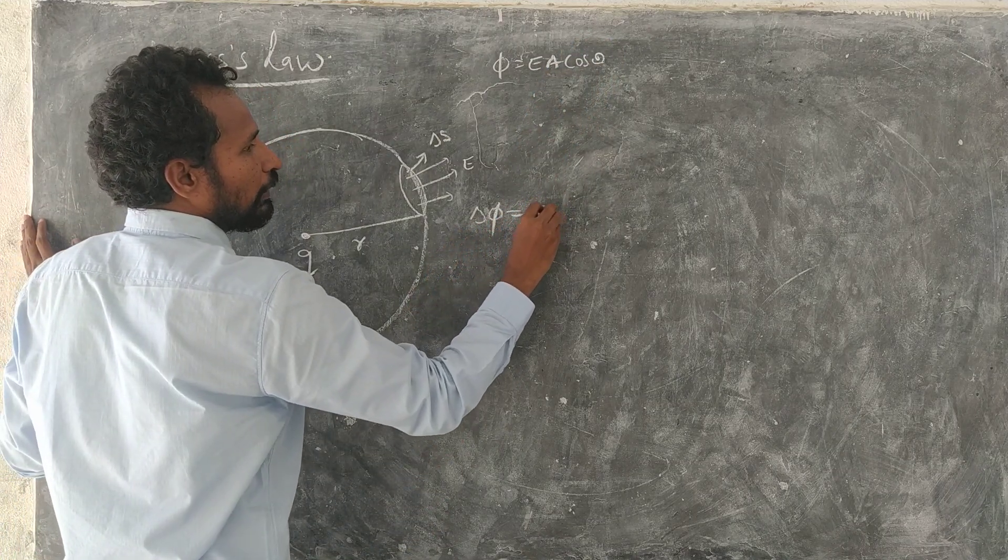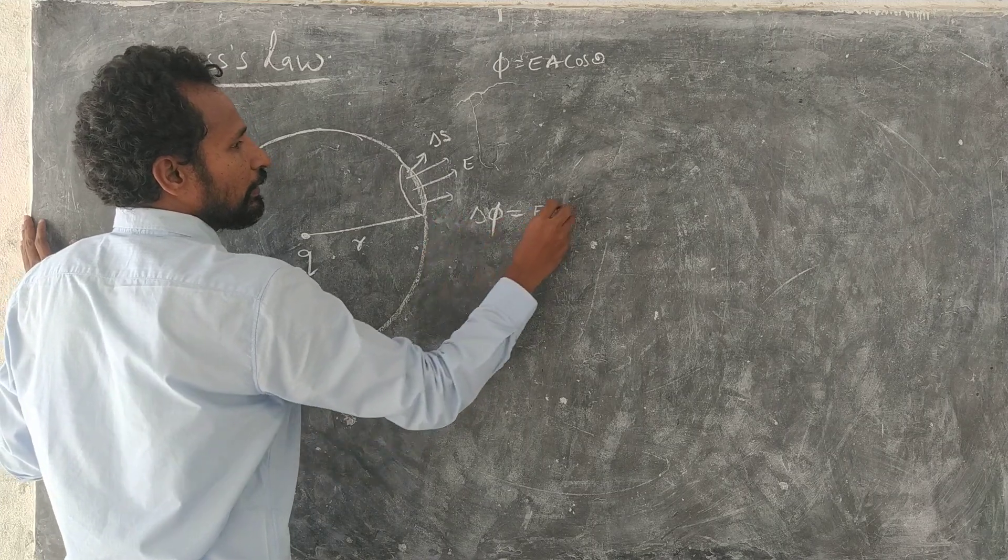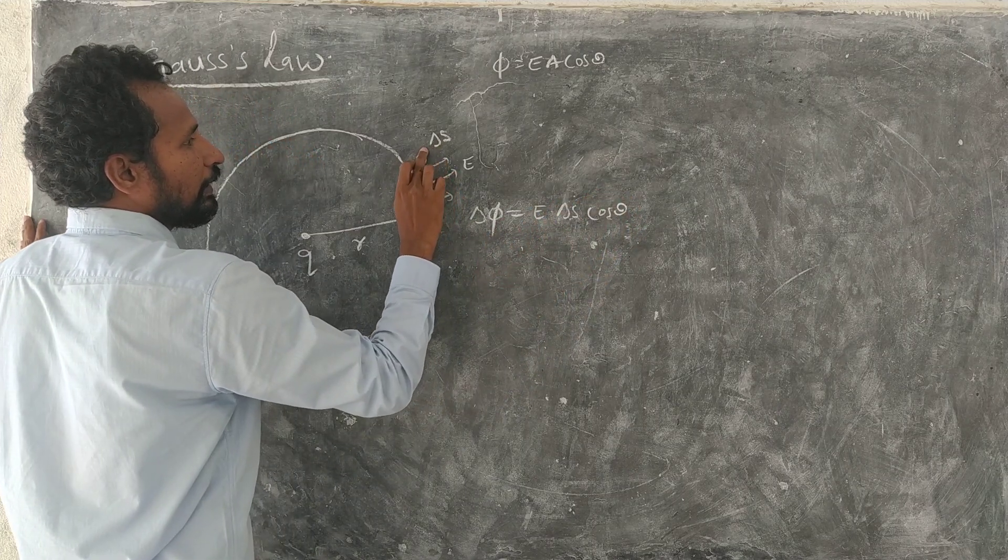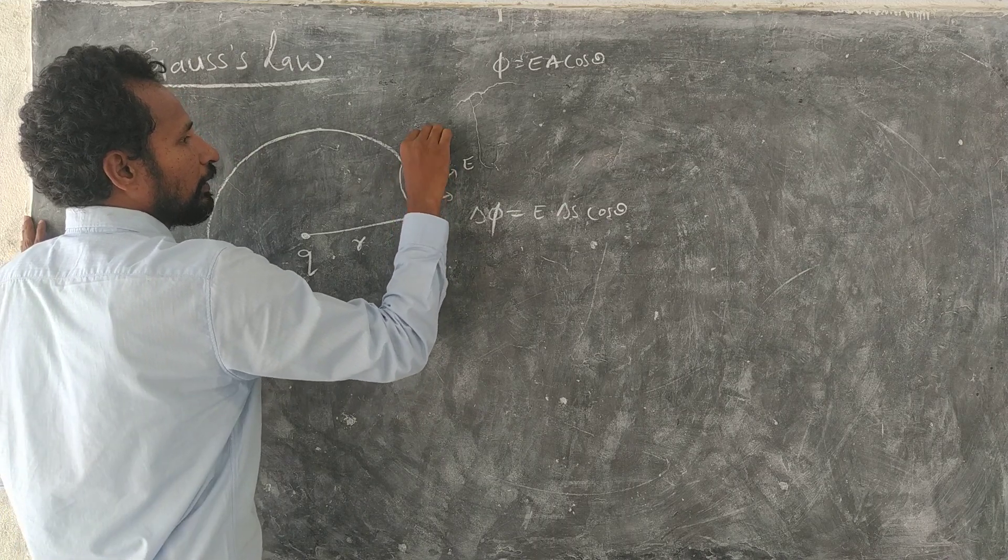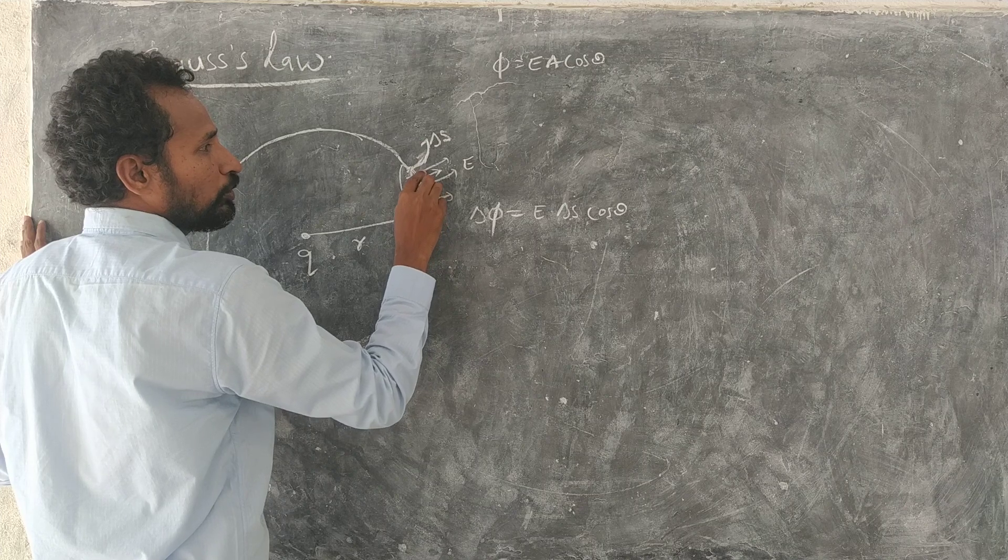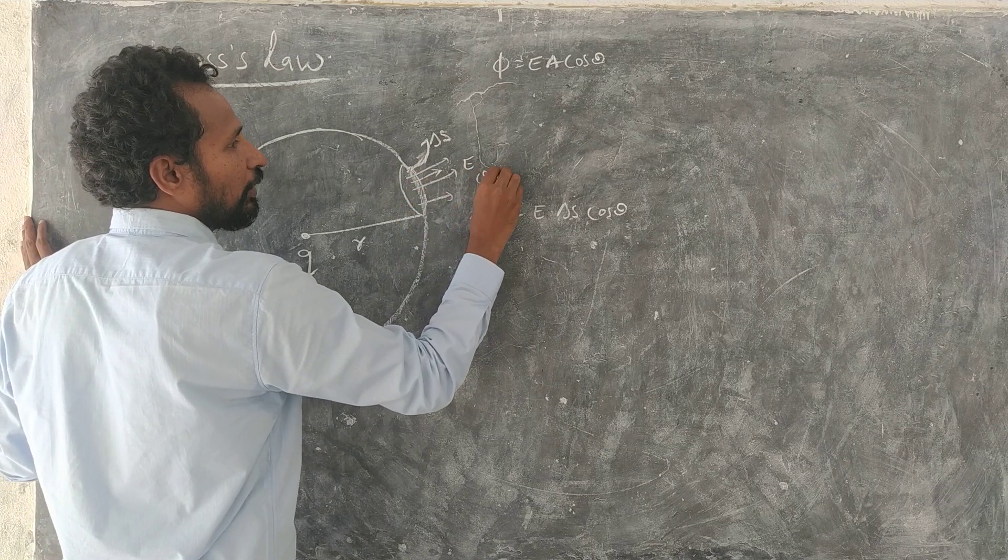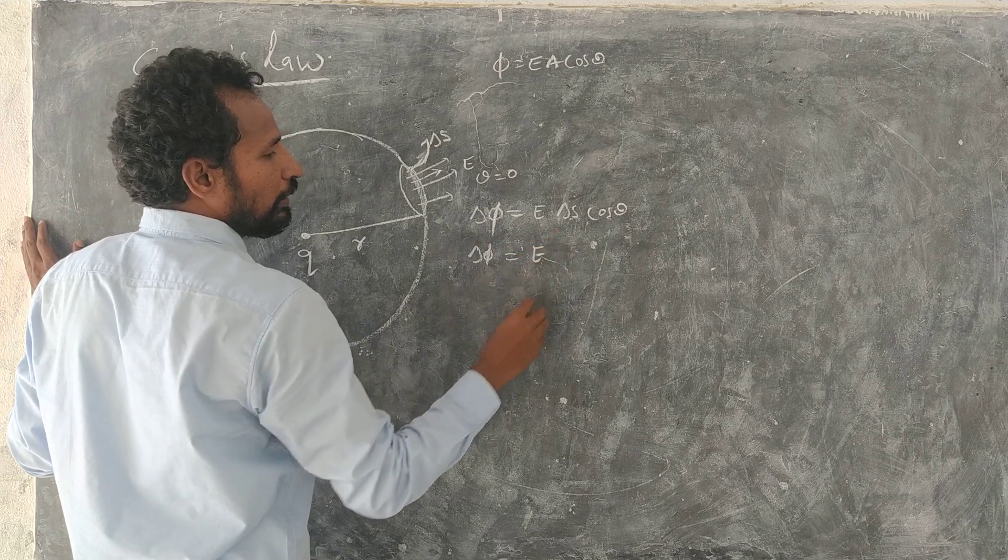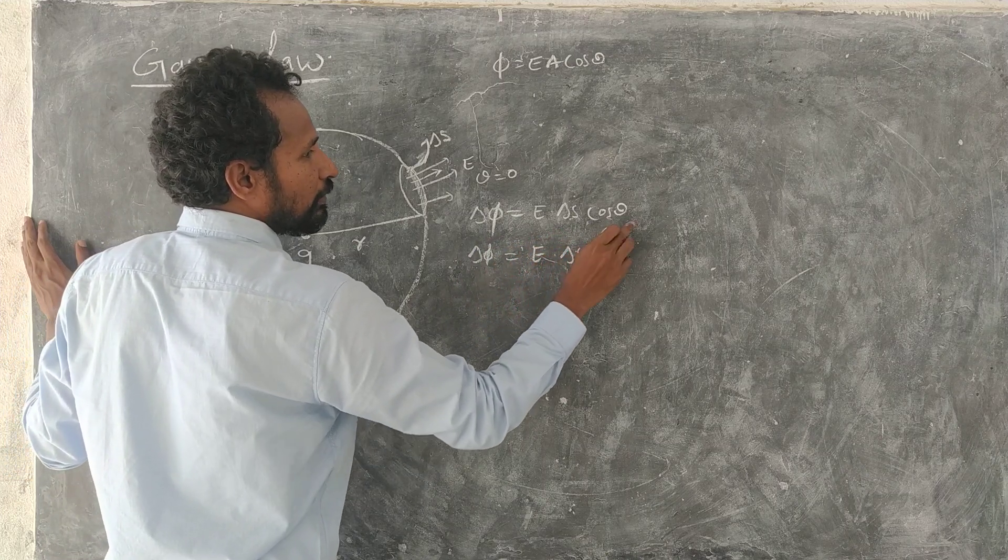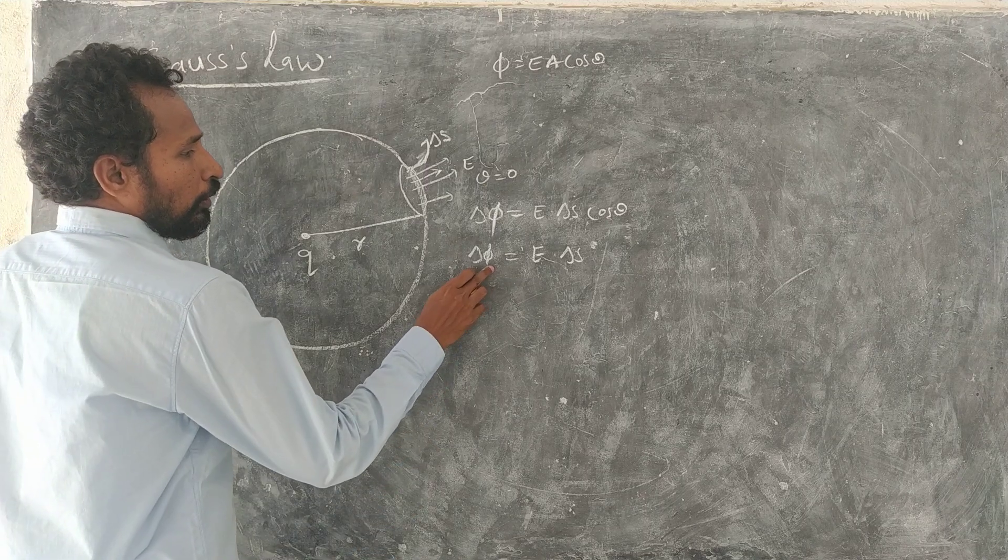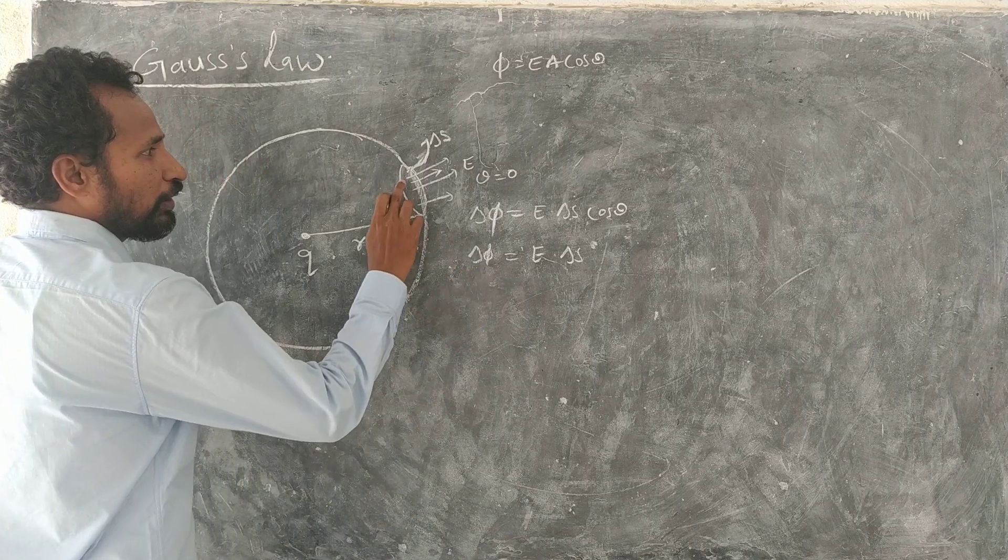Already I explained flux formula phi is equal to E A cos theta. For this, delta phi is equal to electric field E and area is delta s cos theta. This area vector acts like this. Field and area vector both are parallel in this case, theta will be 0. Then delta phi is equal to E delta s cos theta 0, which is 1.